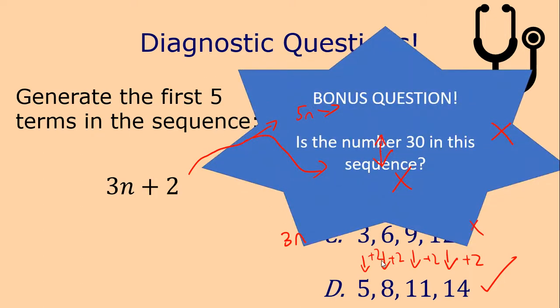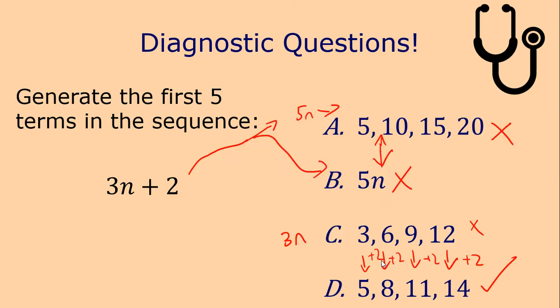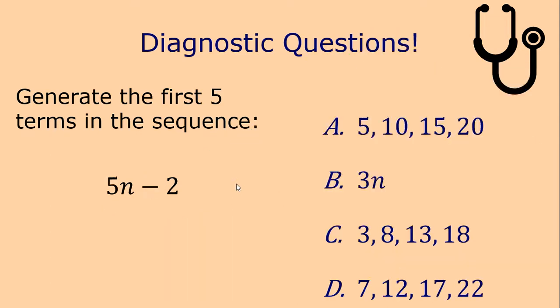Bonus question: is the number 30 in this sequence 3n plus 2? Let's think — 30 is in the three times table. So 30 plus 2 is 32. The answer is no, 30 is not in this sequence. Next question: 5n minus 2.